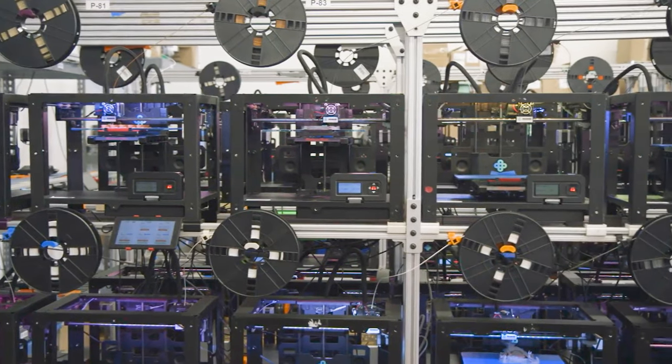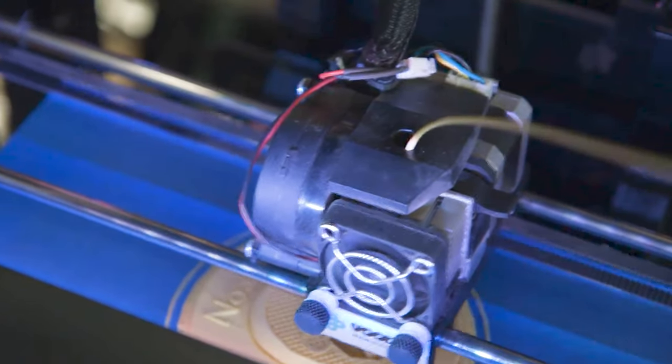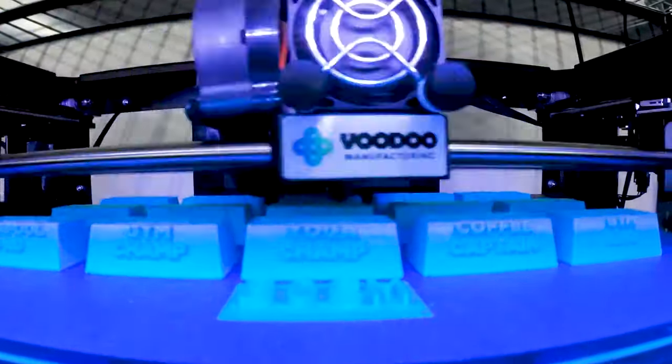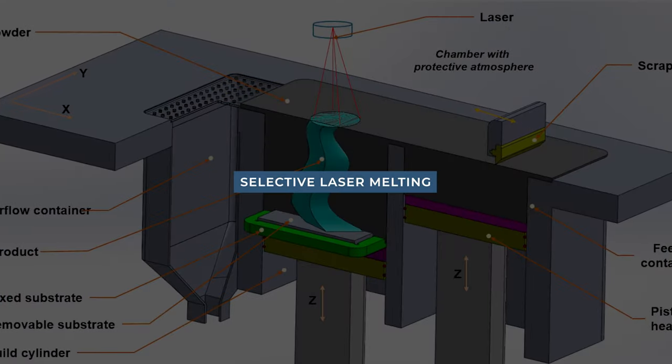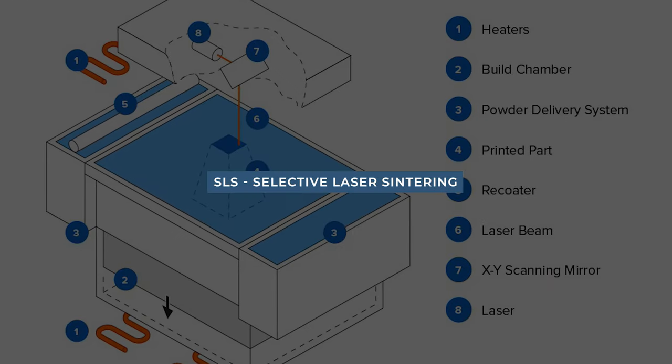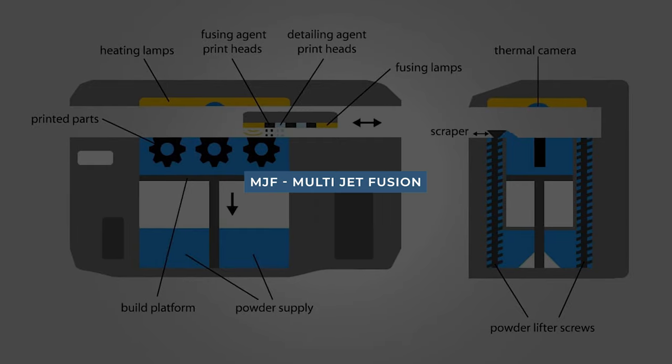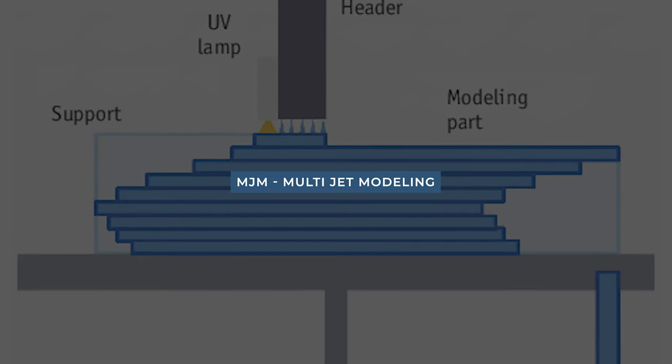And that is a brief history of 3D printing. If you're interested in learning more about 3D printing technologies, check the next video where we dive deeper into technologies such as selective laser melting, electron beam melting, selective laser sintering, multi-jet fusion, PolyJet technology, multi-jet modeling among others.